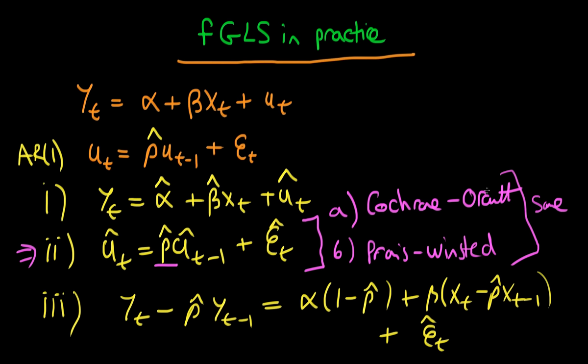Okay, so what properties does FGLS have in sort of practice? So the first thing to say is that FGLS is no longer BLUE. In fact it's biased, and that's because of the fact that we're using our estimated parameter rho hat rather than rho itself, and the sort of penalty we pay for that is that in sort of finite samples FGLS is biased.